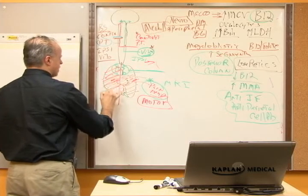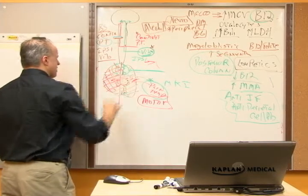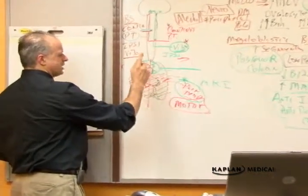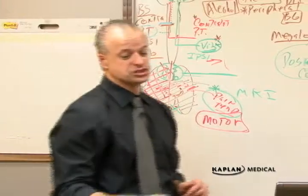Down the cord. There's my Brown-Séquard. Hemisection of the cord. I lose the contralateral pain and temperature and the ipsilateral position and vibratory.